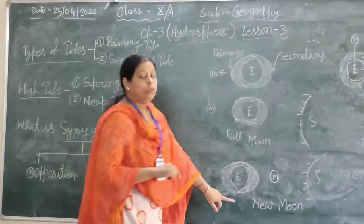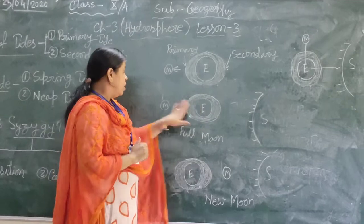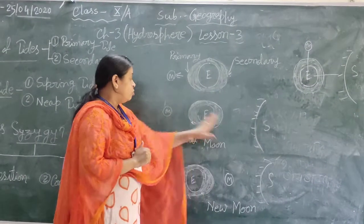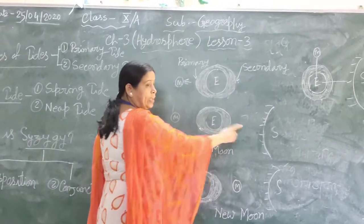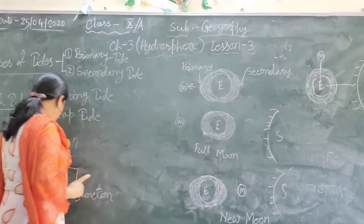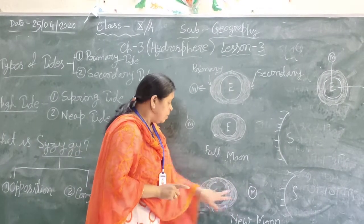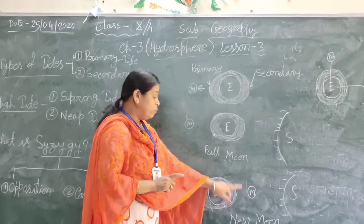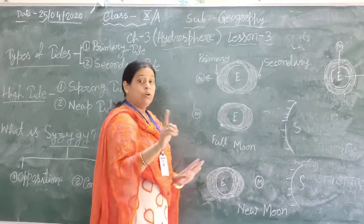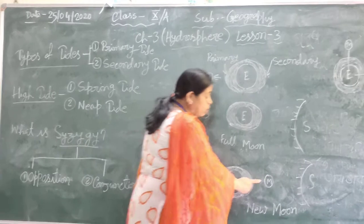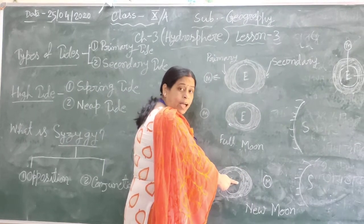Opposition is when we see the full moon — when the earth is in the center between the moon and the sun. Conjunction is when the moon comes between the earth and the sun. In both positions, the moon and the sun have a combined attraction, and the high tide is at its highest height.